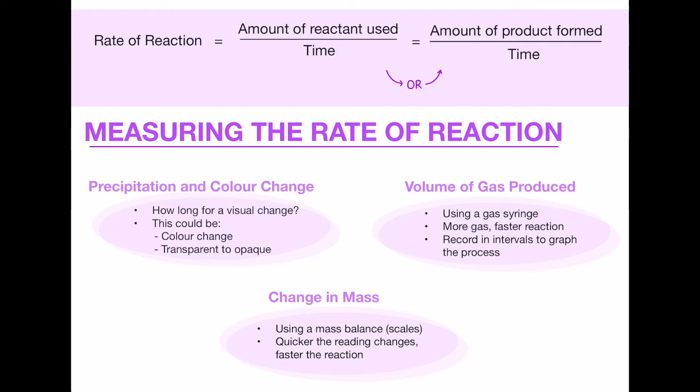And finally the change in mass, so you could put your experiment on a mass balance or effectively scales, and over time you would expect a gas to be let off into the atmosphere and because of that there is going to be less stuff on your scales so there will be a mass decrease normally.